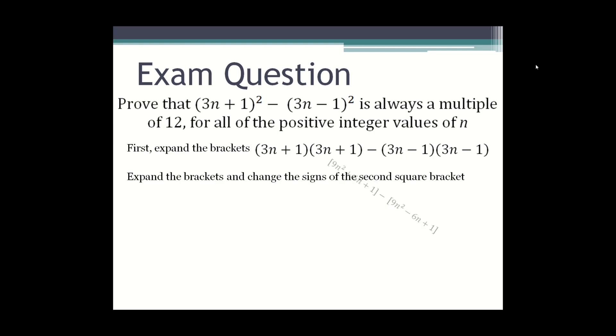So first you expand them. The first two brackets were expanded to 9n² + 6n + 1. You put that into a square bracket and you put minus. In another square bracket 9n² - 6n + 1.